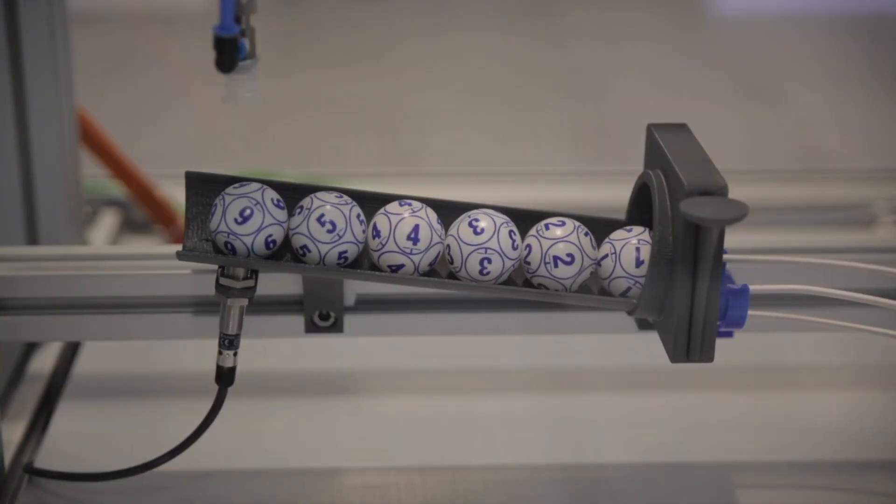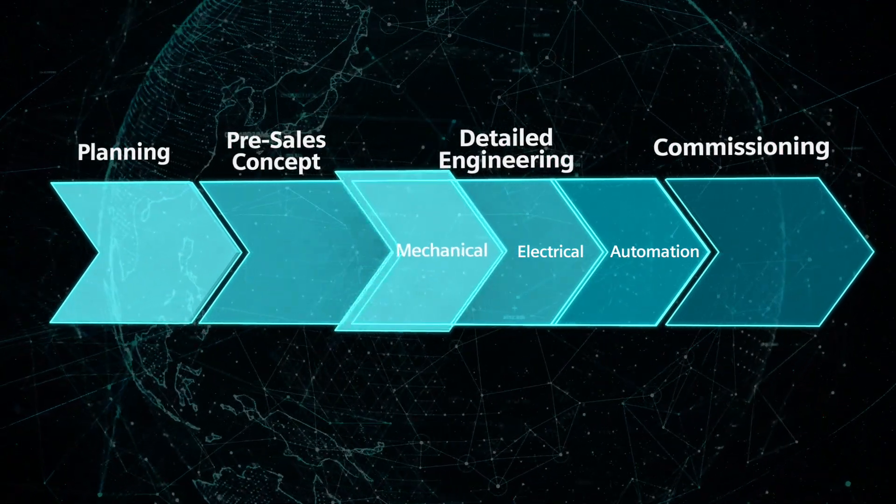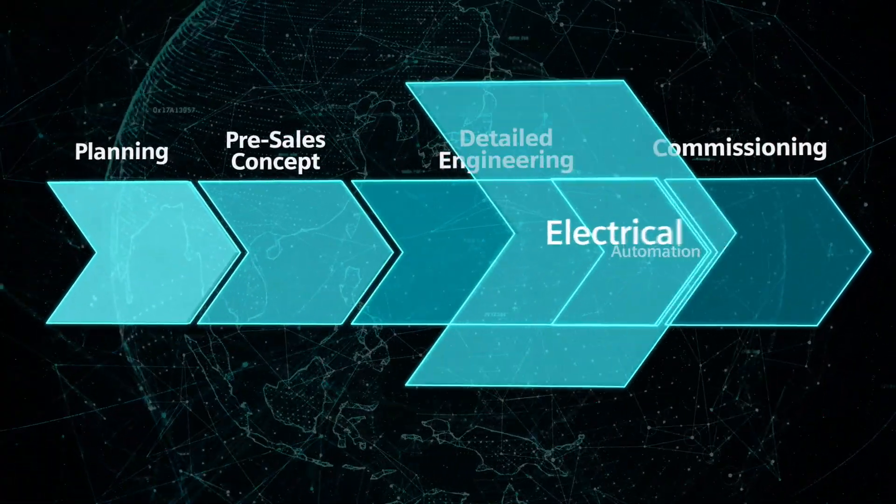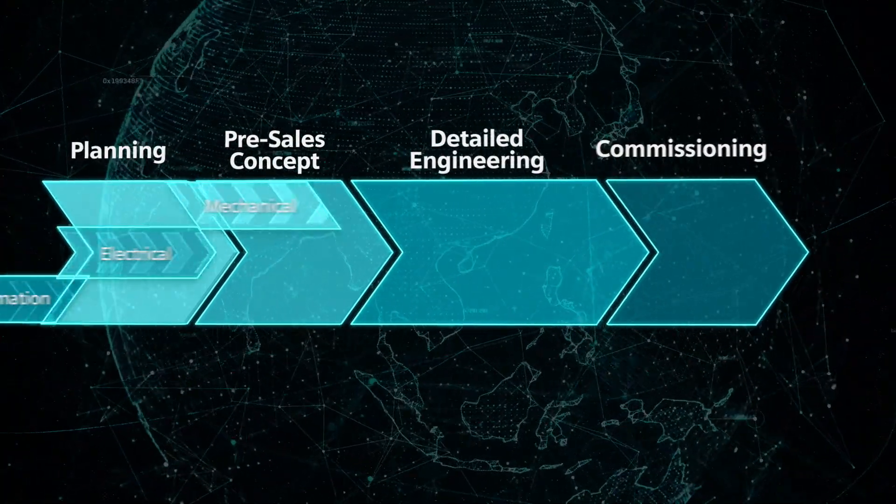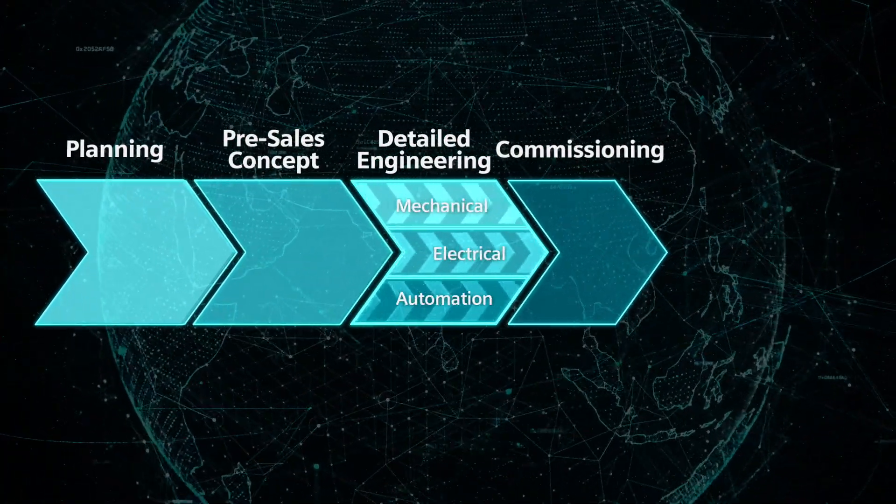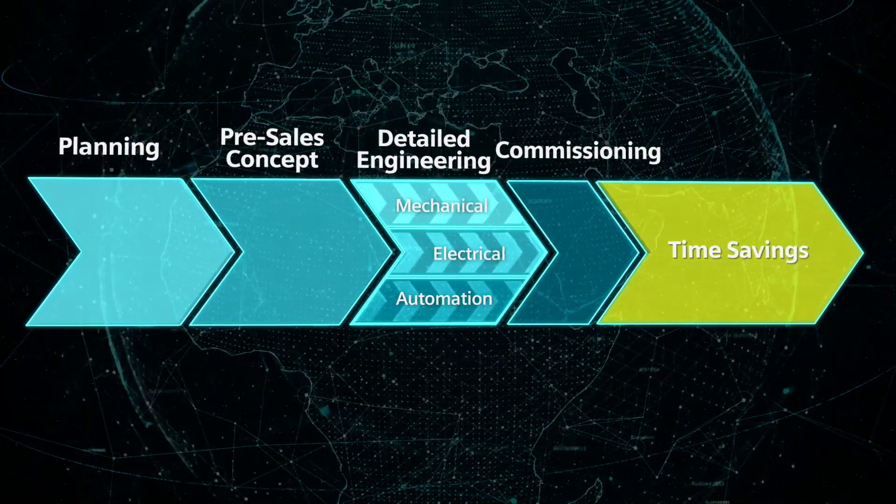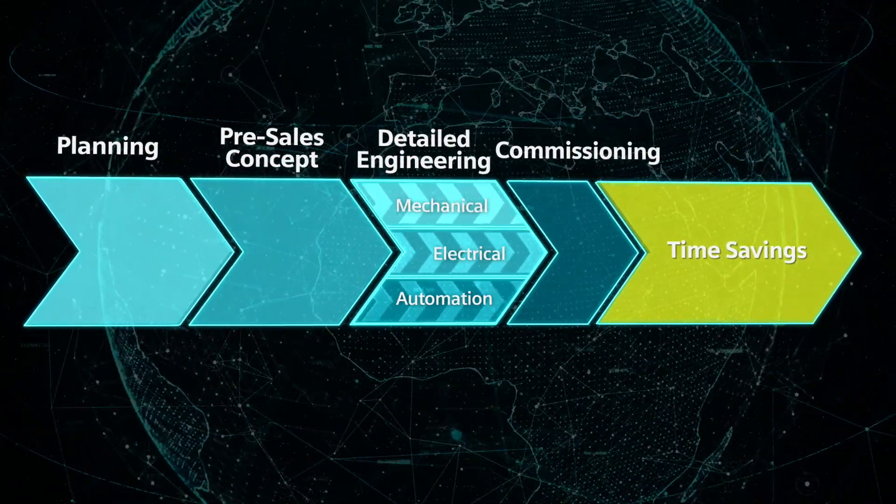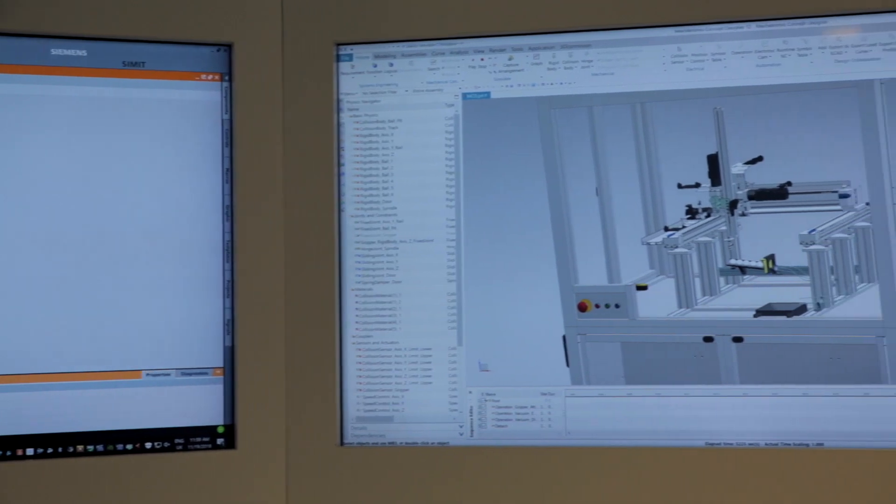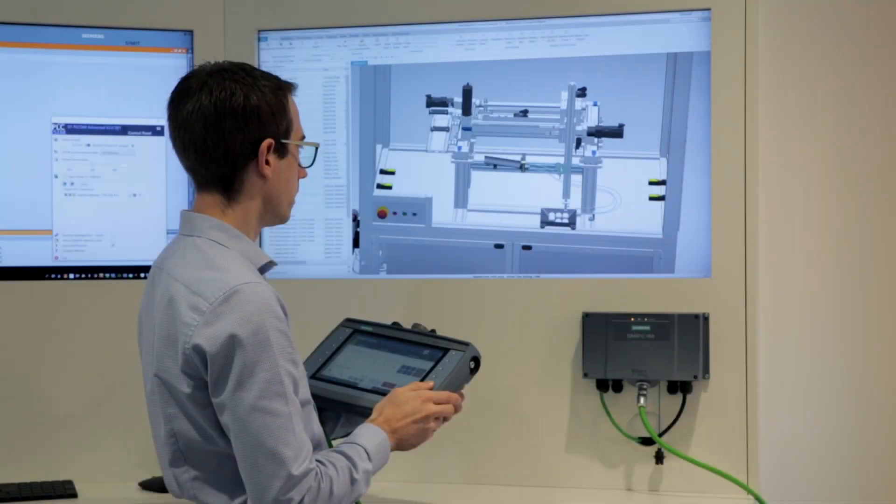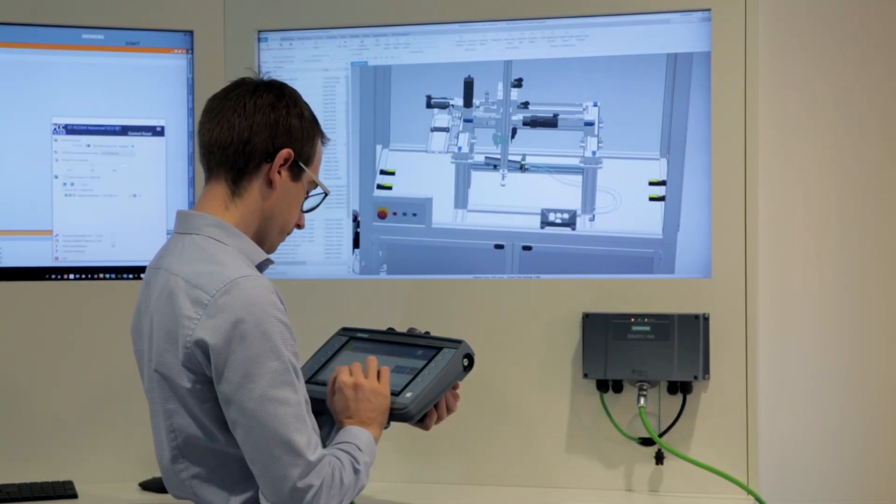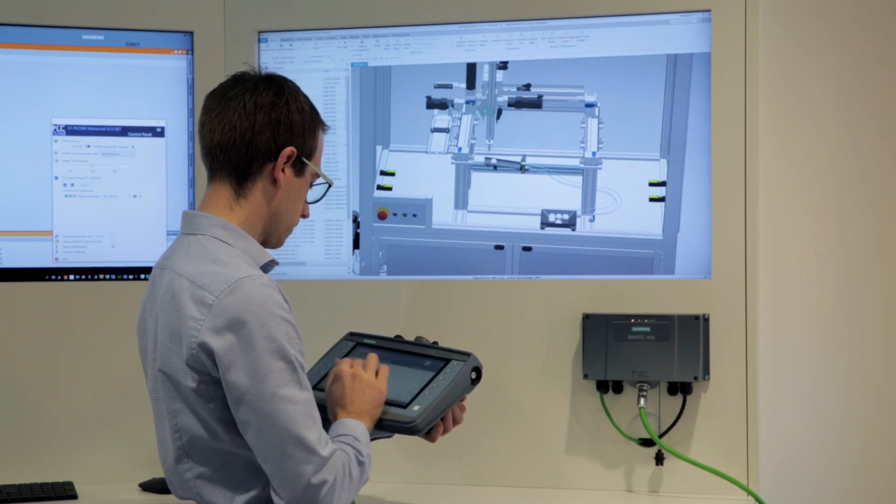Virtual commissioning from Siemens makes it possible to conduct machine commissioning tests early in the development phase, validating a design for its intended use by using its digital model before the physical machine is produced. This digital twin enables machine builders to try out multiple iterations to optimize their design in a virtual environment.